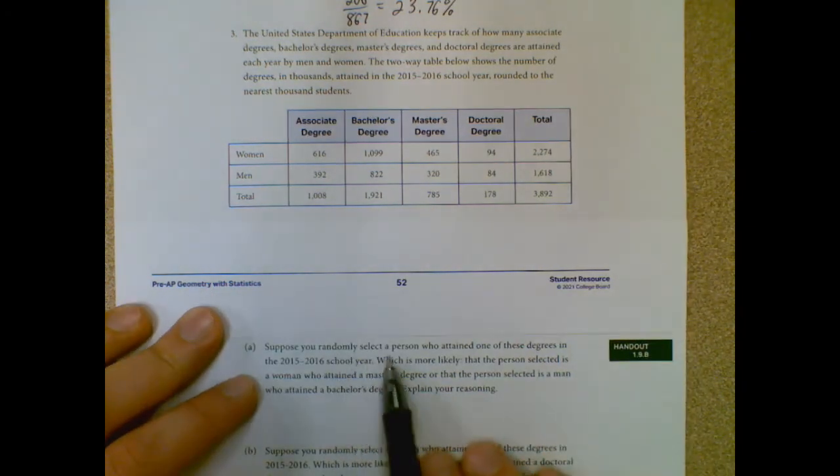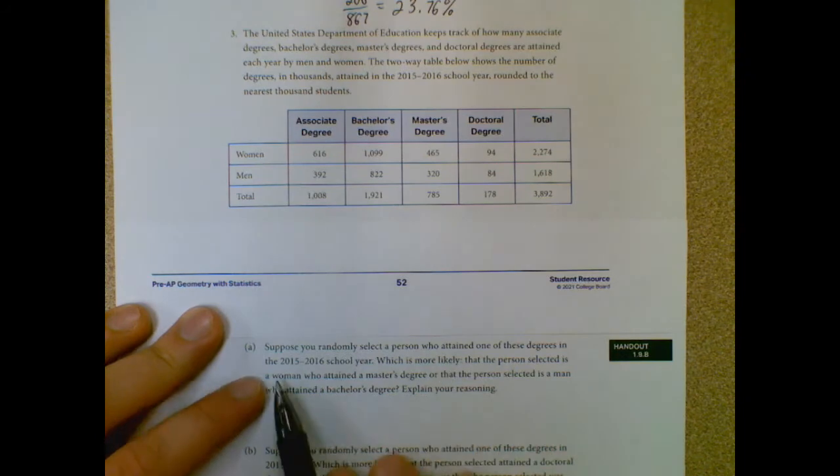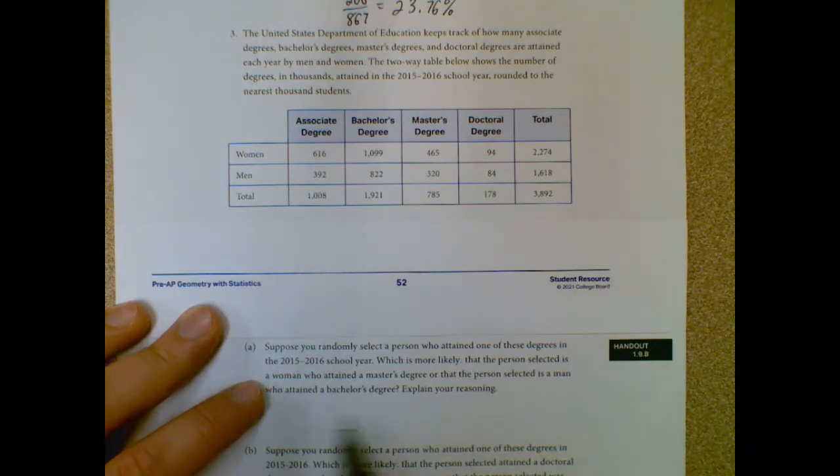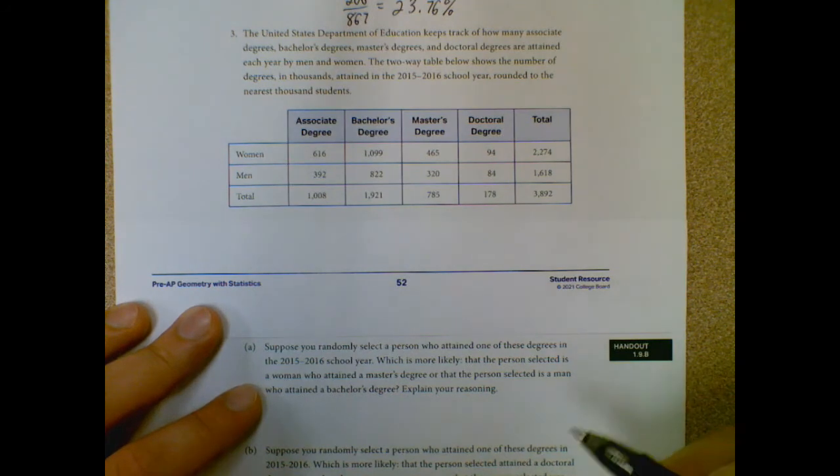Suppose you randomly select a person who attained one of the degrees in the year. Which is more likely: that a person selected is a woman who attained a master's degree, or that a person selected is a man who attained a bachelor's degree? Explain your reasoning.